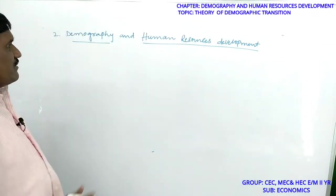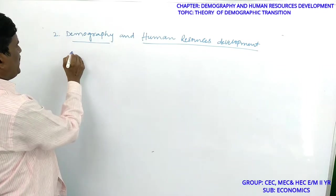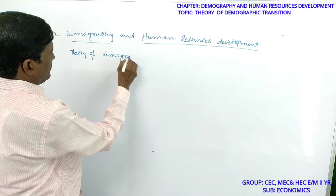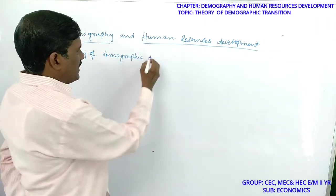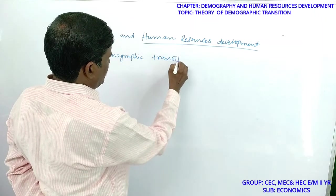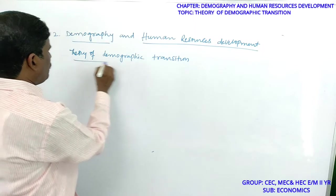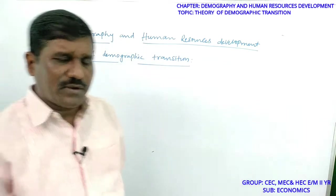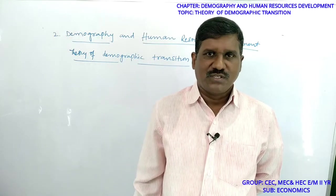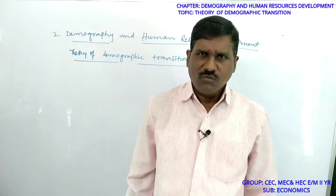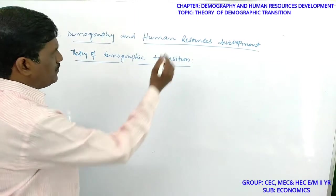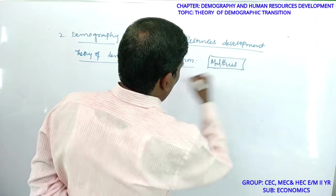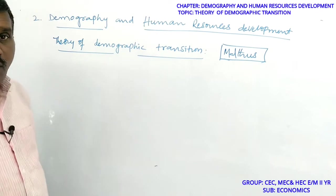In demography, the main concept is the Theory of Demographic Transition. The Theory of Demographic Transition was introduced by TR Malthus. According to Malthus, any economy passes through a process of three stages.